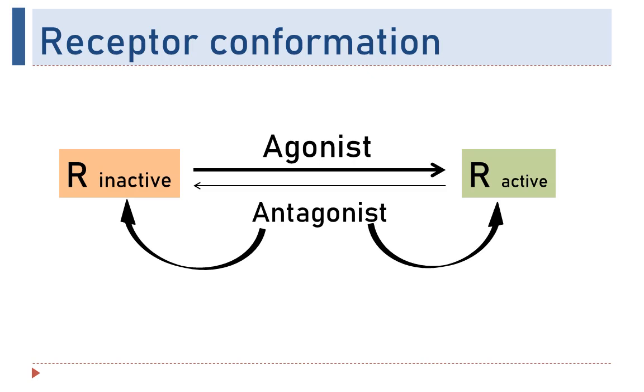Receptors usually exist in at least two conformations, inactive conformation and active conformation. These active and inactive conformations might relate to the open or closed state of an ion channel or active or inactive state of protein tyrosine kinase or the productive or non-productive G proteins.